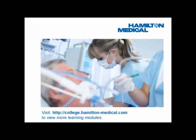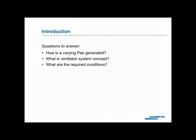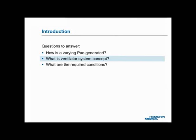It is generally the case that the more the clinicians know, the better the outcome. In the training unit, Lung Ventilation, Natural and Artificial, we learned that artificial lung ventilation with positive pressure is achieved by intermittent alternation of airway opening pressure between the pressure baseline and the peak pressure. After studying this training unit, you should be able to explain how varying airway opening pressure, or PAO, is generated, and the concept underlying a ventilator system and the conditions required for it to work as it should.